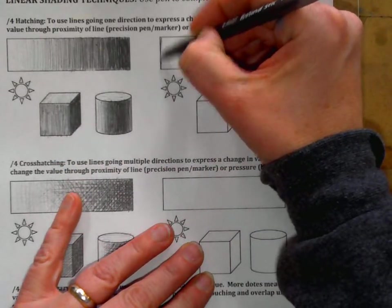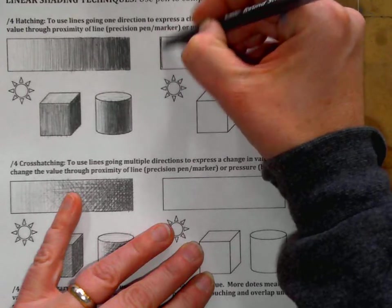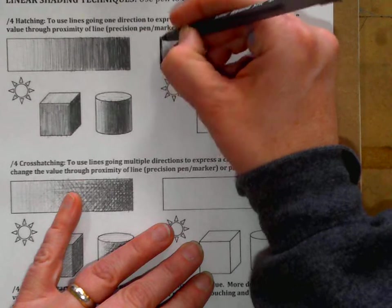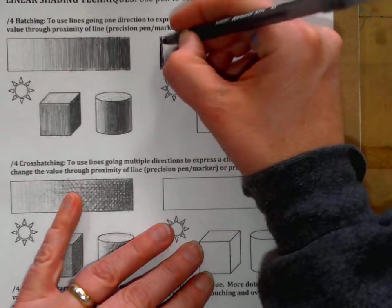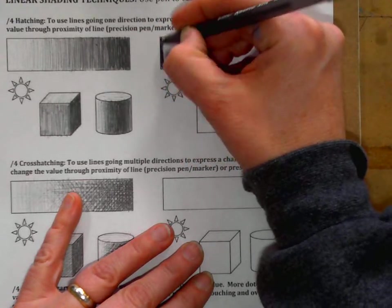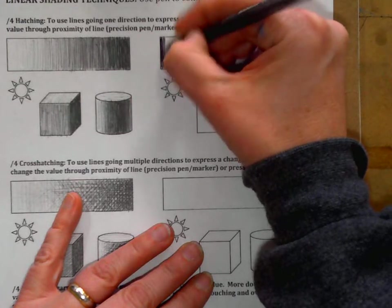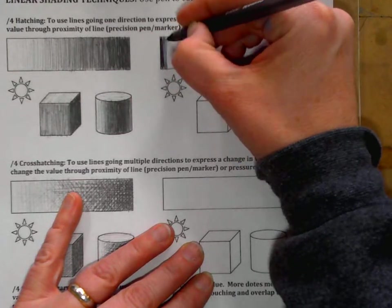What I want you to do is use short, close, overlapping marks. Just like with graphite, if I use a more vertical technique, the value is going to be really dark. And then as I want it to get lighter, I'm going to go over it less times.